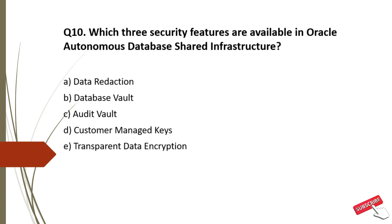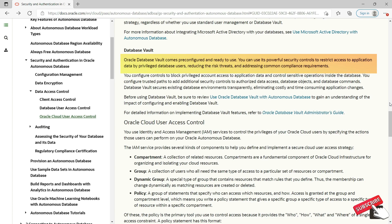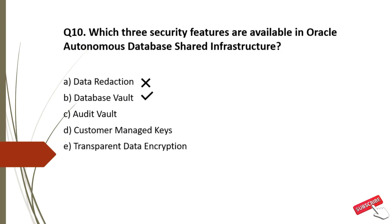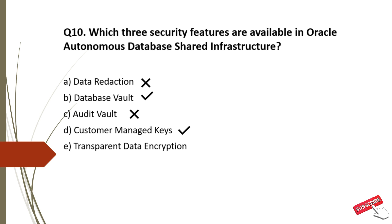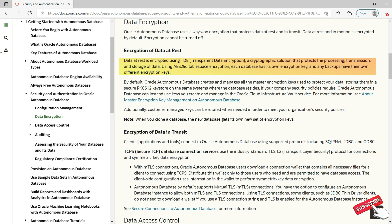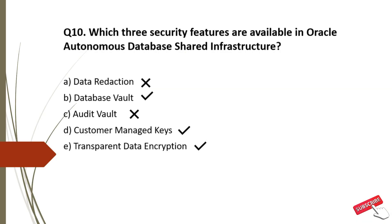Option A: Data Reduction — incorrect. Option B: Database Vault — Oracle Database Vault comes pre-configured and ready to use; you can use its powerful security controls to restrict access to application data by privileged database users, reducing the risk of threats and addressing compliance requirements — correct. Option C: Audit Vault — incorrect. Option D: Customer Managed Keys — offered by OCI Vault Key Management Service, where the customer controls and manages the keys that protect their data — correct. Option E: Transparent Data Encryption — data at rest is encrypted using TDE, a cryptographic solution protecting processing, transmission, and storage of data — correct. The correct options for Question 10 are B, D, and E.